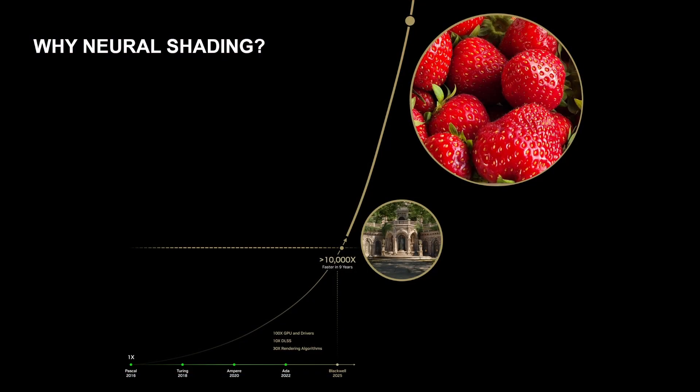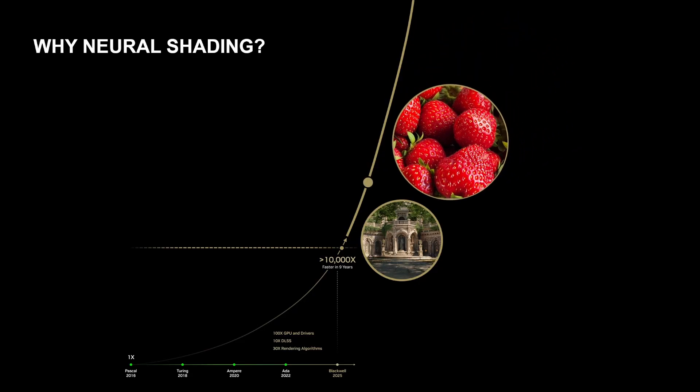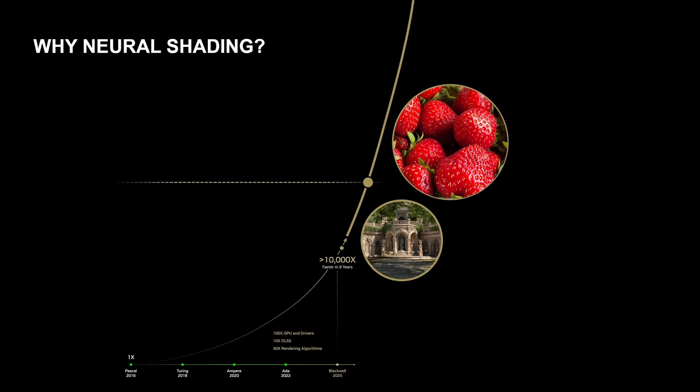This is really why neural shading can help us get to strawberry levels of detail. On the one hand, by making the components of our renderer more capable — by making them trainable — we need less raw compute to get there. And by making the workload itself more amenable to acceleration, we'll get more compute throughput out of our machines.